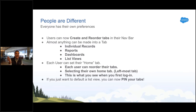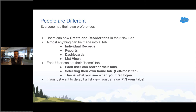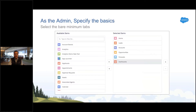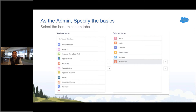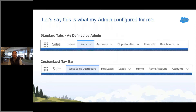So if there's a list they like, a dashboard they like, an account they always go to, they can put it all the way to the left, and when they log in, that's what they're going to see. This is just a really, really nice feature. You as the admin specify the minimum tabs they're going to get, so they can't remove those tabs — they will always be there.